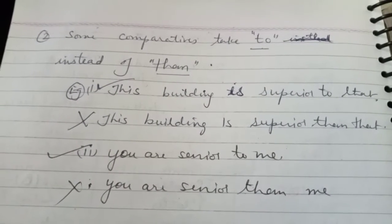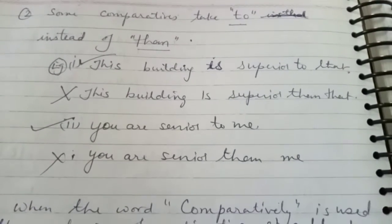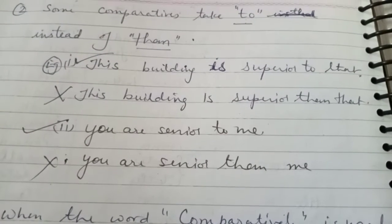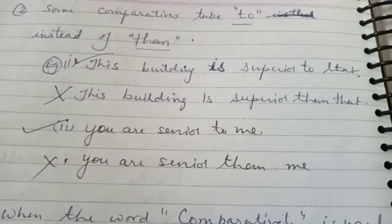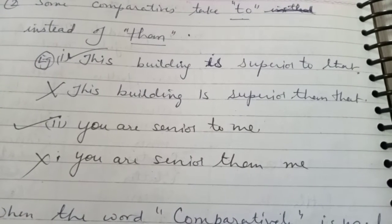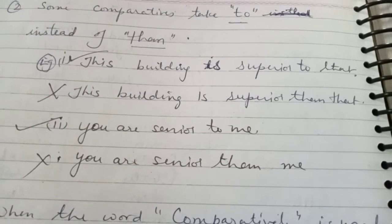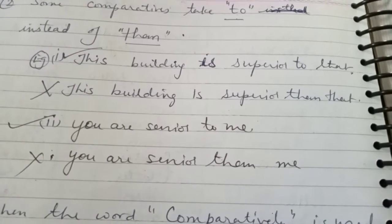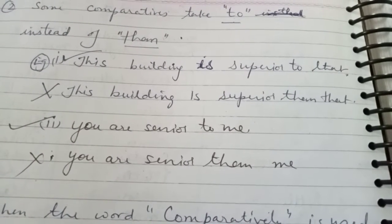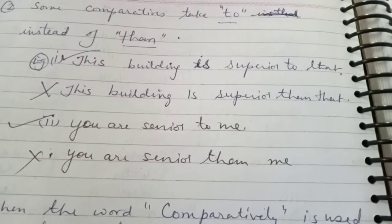The second point is: some comparatives take 'to' instead of 'than.' For example: 'This building is superior to that building.' Here the adjective 'superior' is comparative degree, but we do not write 'than.' If you write 'than' in such a sentence, you will get it wrong. It must be written with 'to.'